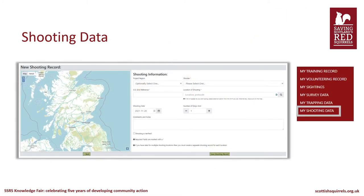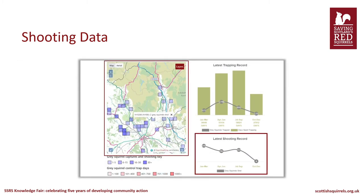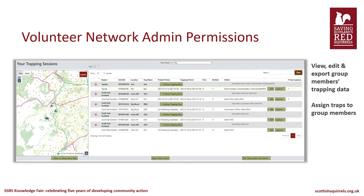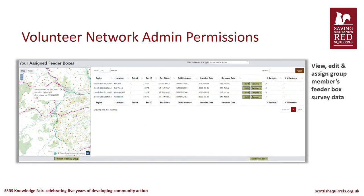We added shooting pages to the Hub after recognising that some of our volunteers shoot as a form of grey squirrel control and therefore needed a place to record this data. The number of shot squirrels by Tetrad was added as a layer to the grey squirrel control map online for all control volunteers to access. To prepare our network groups for independence, we increased the permission levels the network admins have on the Hub, providing them access and oversight of data from members of their group to help with planning and monitoring. Admins can now view, edit and export group members' trapping data, assign traps to group members, and have the same permissions for shooting records and feeder box survey data.